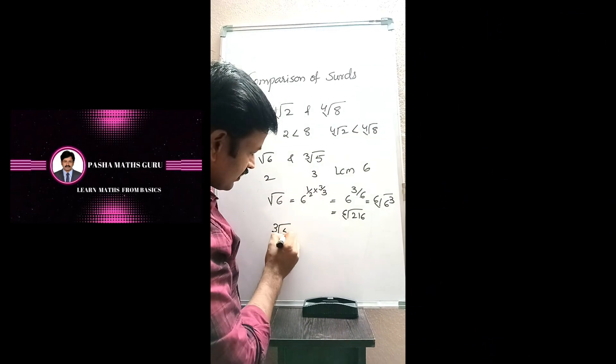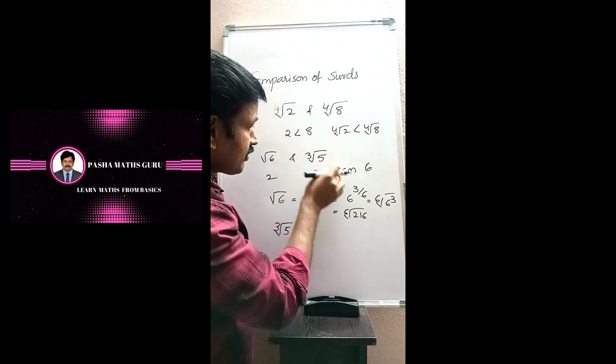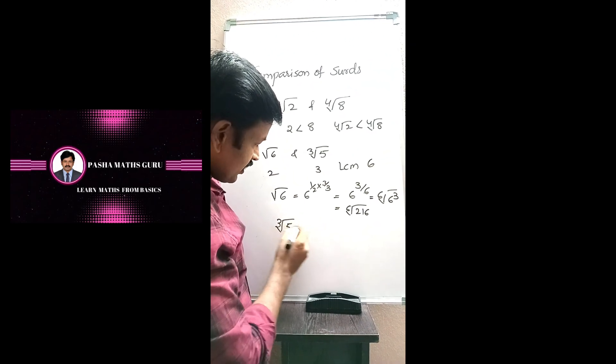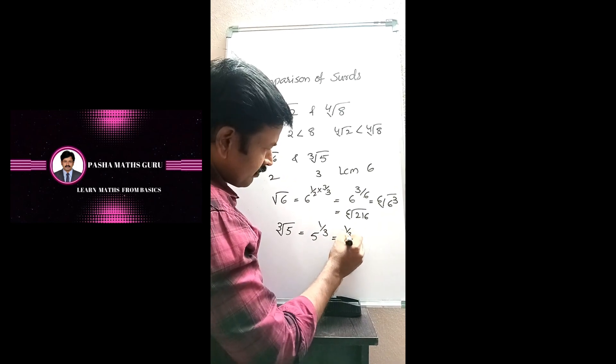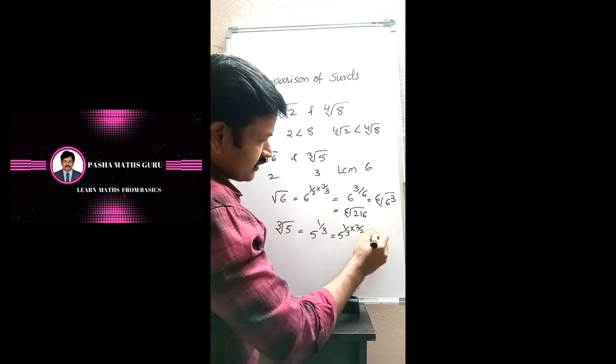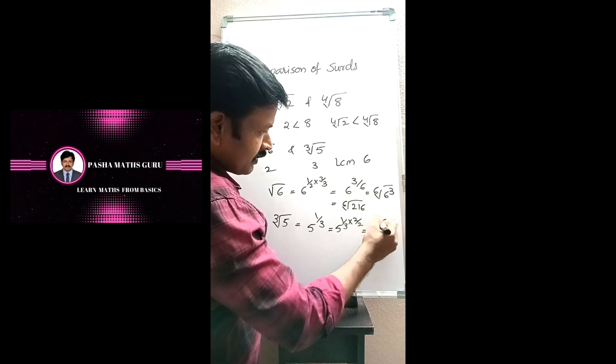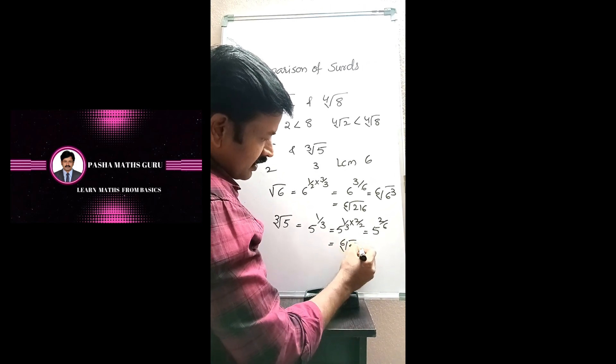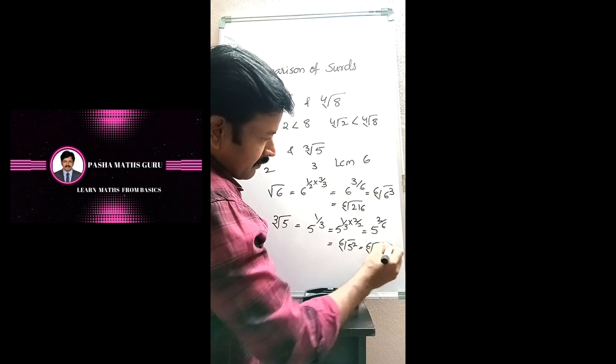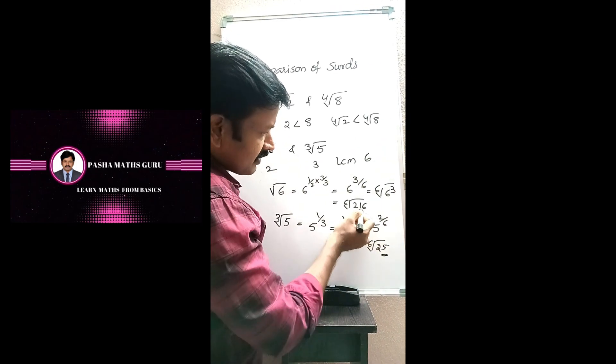Let us take 2nd surd cube root 5, which is equal to 5 power 1 by 3. This is equal to 5 power 1 by 3 into 2 by 2, which is equal to 5 power 2 by 6. Here, 6th root 5 square. As 5 square is 25, 6th root 25.